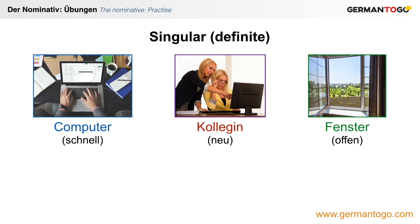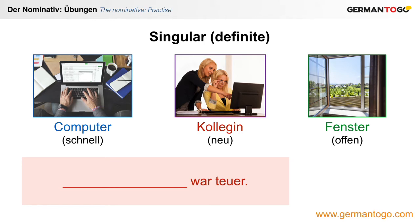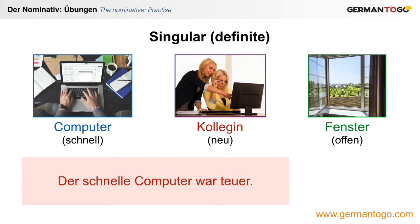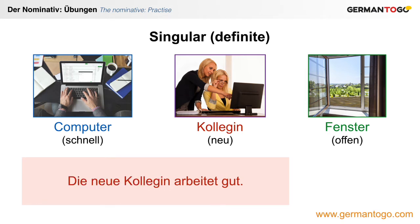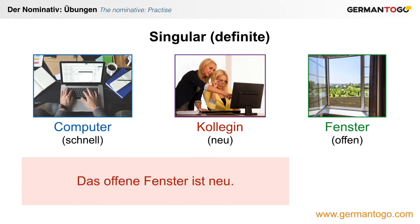Now I want you to use them in a sentence. How do you say the fast computer was expensive? Der schnelle Computer war teuer. The new female colleague works well — Die neue Kollegin arbeitet gut. And the open window is new — Das offene Fenster ist neu.